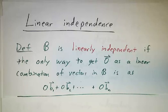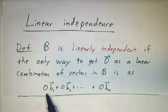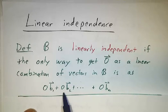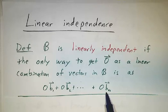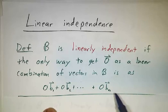So we say a bunch of vectors are linearly independent if the only way to write 0 as a linear combination is the trivial way. You can always get the 0 vector by taking 0 times b₁ plus 0 times b₂ and so on, plus 0 times bₙ. The question is, can you get 0 any other way?